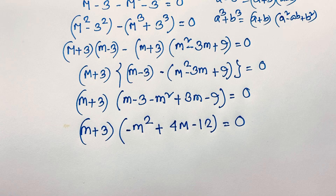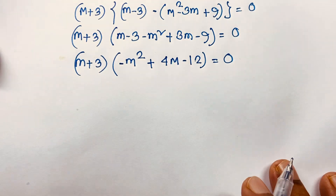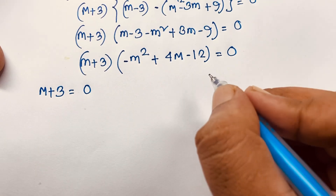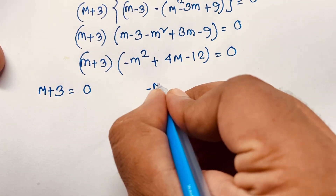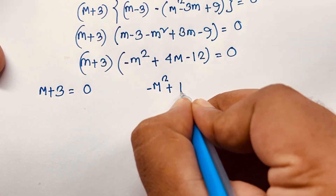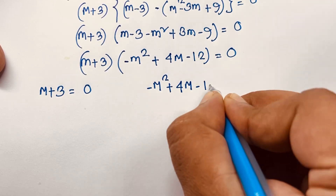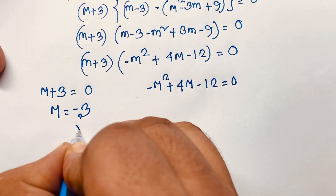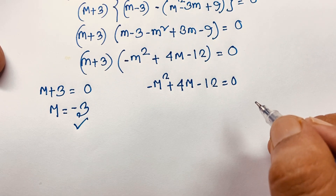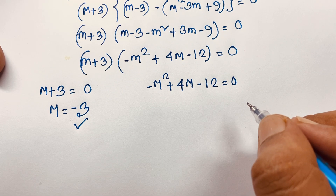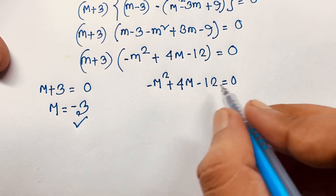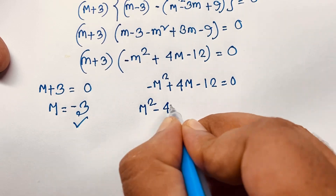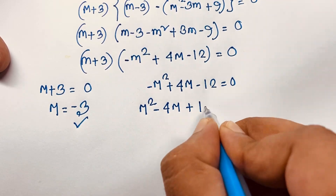We will find two cases. Our first case: m plus 3 is equal to 0, so m equals negative 3. That is our real solution. The other case: negative m squared plus 4m minus 12 equals 0. I multiply both sides by negative 1, so it becomes m squared minus 4m plus 12 equals 0.